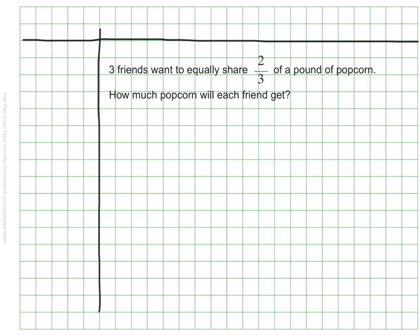I know this is a division problem because I'm looking to share something equally. The students are sharing the popcorn, so the popcorn, the amount of popcorn will be our dividend.